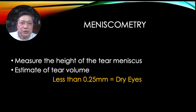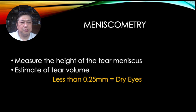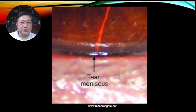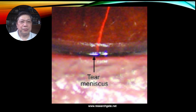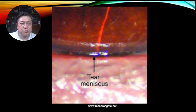Meniscometry is basically a measurement of the height of the tear meniscus — an estimate of tear volume. You look at where the edge of your eyelid meets the eyeball and will see a small lake of fluid, like a dam of clear liquid. That's the tear meniscus. If it's 0.25 millimeters or below, it's equivalent to dry eyes — it should be more.